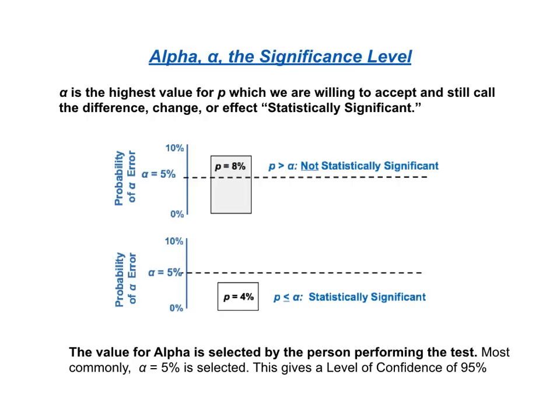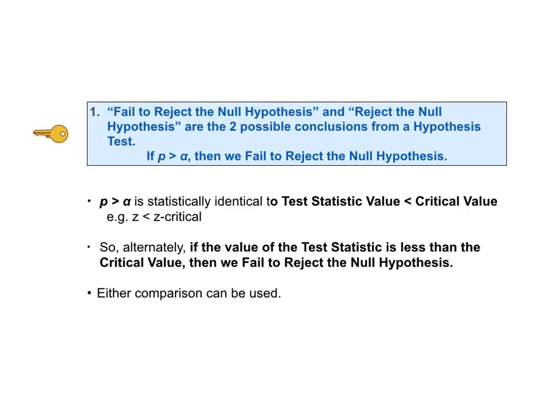That concludes our explanation of the four concepts — hypothesis testing, null hypothesis, p, and alpha. Now let's begin our more detailed explanation for each of the three keys to understanding. In step two we selected a value for alpha, and in step four a value for p is calculated by the test. This gives us what we need for the comparison in KTU number one: if p is greater than alpha, then we fail to reject the null hypothesis. If p is not greater than alpha — that is, if p is less than or equal to alpha — then we reject the null hypothesis.